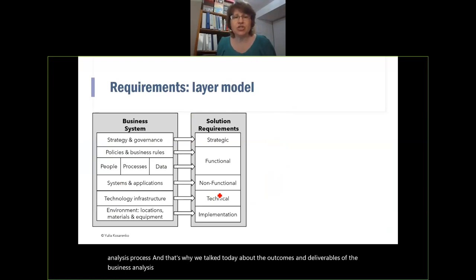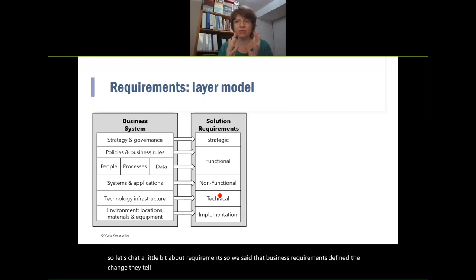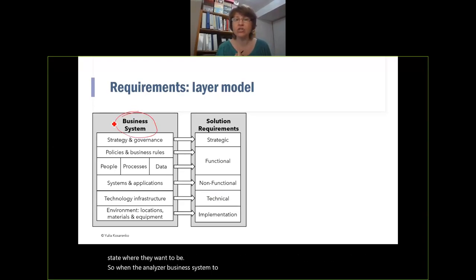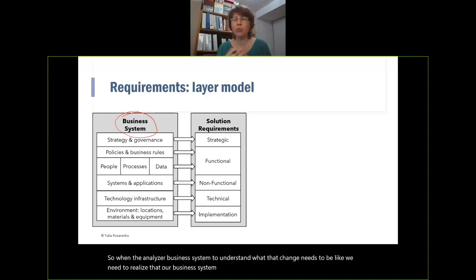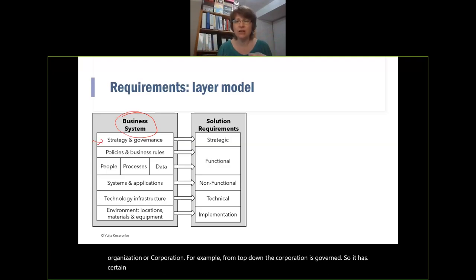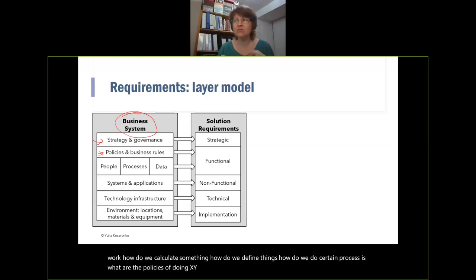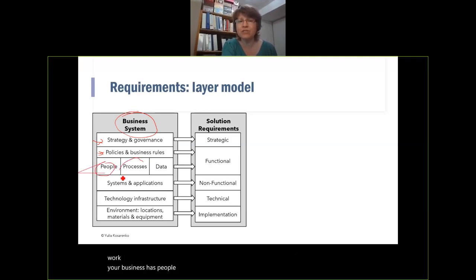Business requirements define the change — they tell us what needs to change so the business gets from the current state to the future state. When we analyze our business system to understand what that change needs to be like, we realize our business system has layers and components. From top down: a corporation has governance structures and strategies, then policies and business rules that determine how things work — how we calculate something, how we define things, what processes we follow.